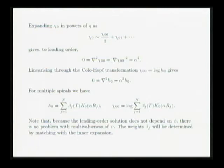You can use the Cole-Hopf transformation at leading order without difficulty, and then just be careful not to do anything silly at first order. To do that, I've got to expand the phase in powers of q in the outer region — it starts at 1/q. Then you get a nonlinear but linearizable equation, and for multivalued spiral solutions I can now just add the Bessel functions — now it's K_0, because I'm taking the limit q goes to 0. This depends on the distance to the spirals: R_J is the local distance to the j-th spiral, but it doesn't depend on the angles anymore, so there's no problem with multivaluedness.